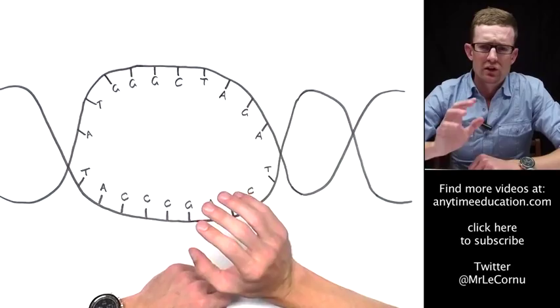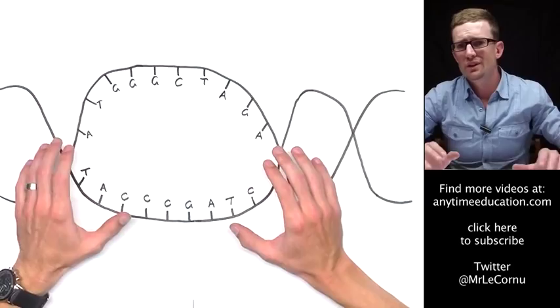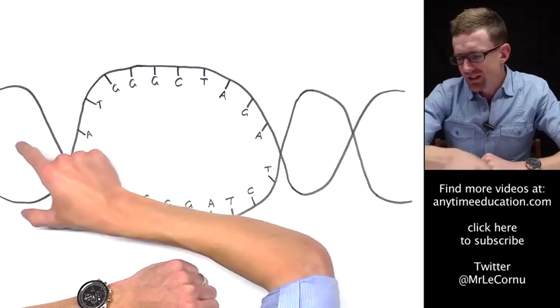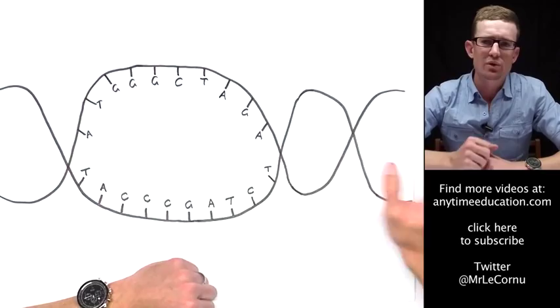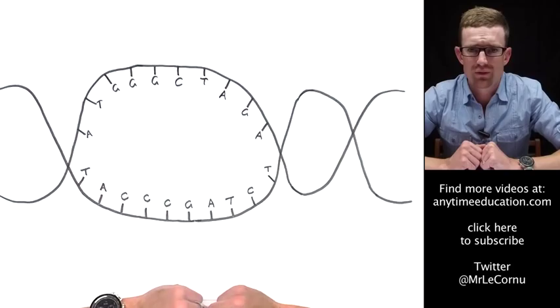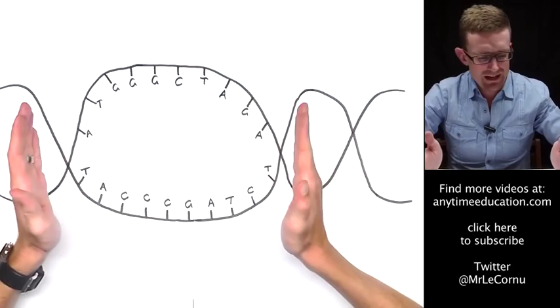Now I'm going to give you a warning here: be careful, lots of students get this process, transcription, confused with DNA replication. The difference is, in DNA replication, the entire double helix unzips and the entire double helix is replicated, and we end up with two DNA molecules at the end of the process.